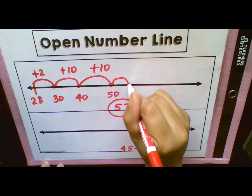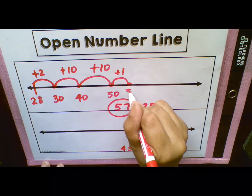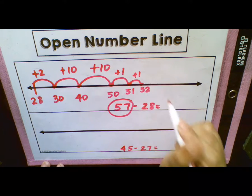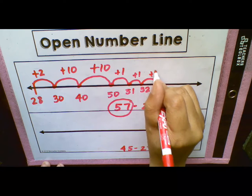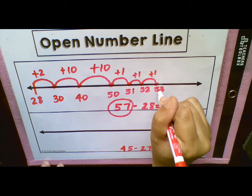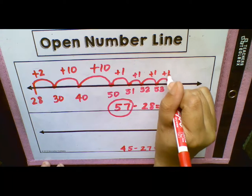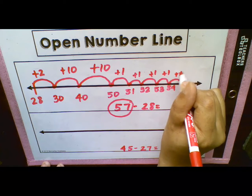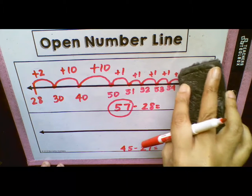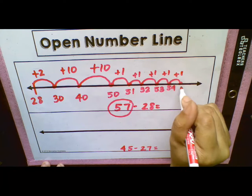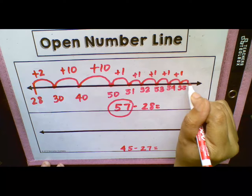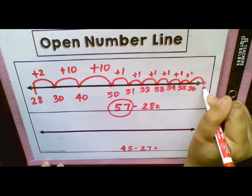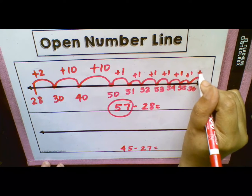I'm going to go up 1. 50 plus 1 is 51. Plus another 1 is 52. Plus another 1 is 53. Plus another 1 is 54. Plus another 1, oops, sorry about that. Plus another 1 is 55. I don't know if I'm going to get it in here. Plus another 1 is 56. And I'm just going to draw another one over here just to make sure I get to that 57 and plus another 1.